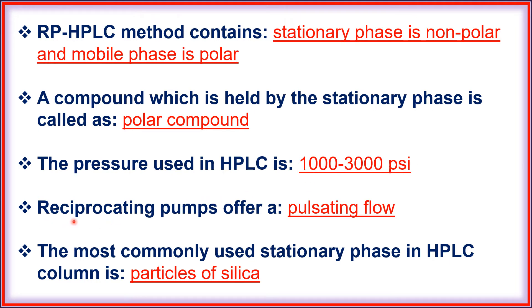Reciprocating pumps offer a pulsating flow. The commonly used stationary phase in an HPLC column is particles of silica.